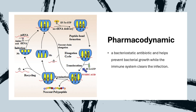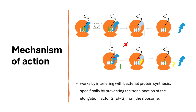Pharmacodynamics: Fusidic acid is a bacteriostatic antibiotic that helps prevent bacterial growth while the immune system clears the infection. Mechanism of action: Fusidic acid works by interfering with bacterial protein synthesis, specifically by preventing the translocation of the elongation factor G (EF-G) from the ribosome. It can also inhibit chloramphenicol acetyltransferase enzymes.